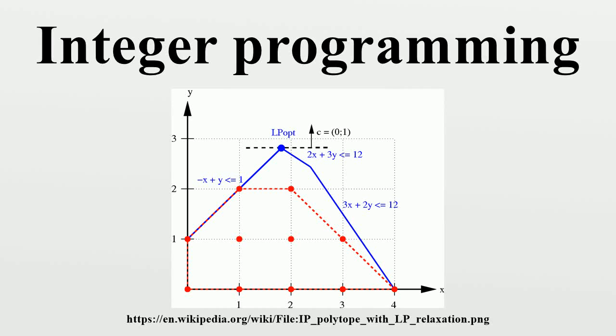An integer programming problem is a mathematical optimization or feasibility program in which some or all of the variables are restricted to be integers. In many settings the term refers to integer linear programming, in which the objective function and the constraints are linear.